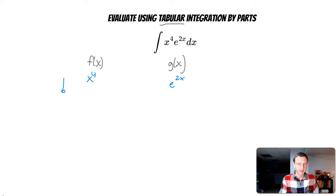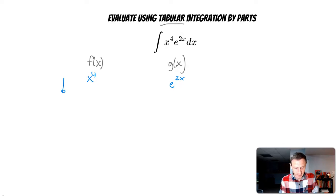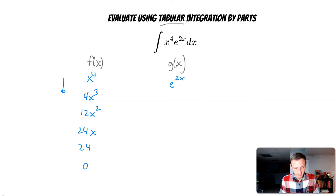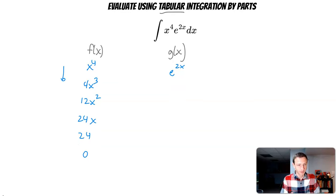What you do is run down the line of your f(x) and take the derivative until you get to zero. The derivative of x to the 4th is 4x cubed, derivative of 4x cubed is 12x squared, derivative of 12x squared is 24x, derivative of 24x is 24, and derivative of 24 is 0. So we've zeroed it out.